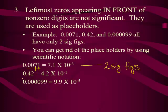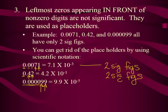Looking at the second value, .42: there's only one zero in the front and it does not count. This is a decimal in the form of .42. You know the four counts and the two counts — this one also has two sig figs. Looking at the last value, all the zeros in the front are not significant. Every example on this screen has two sig figs.